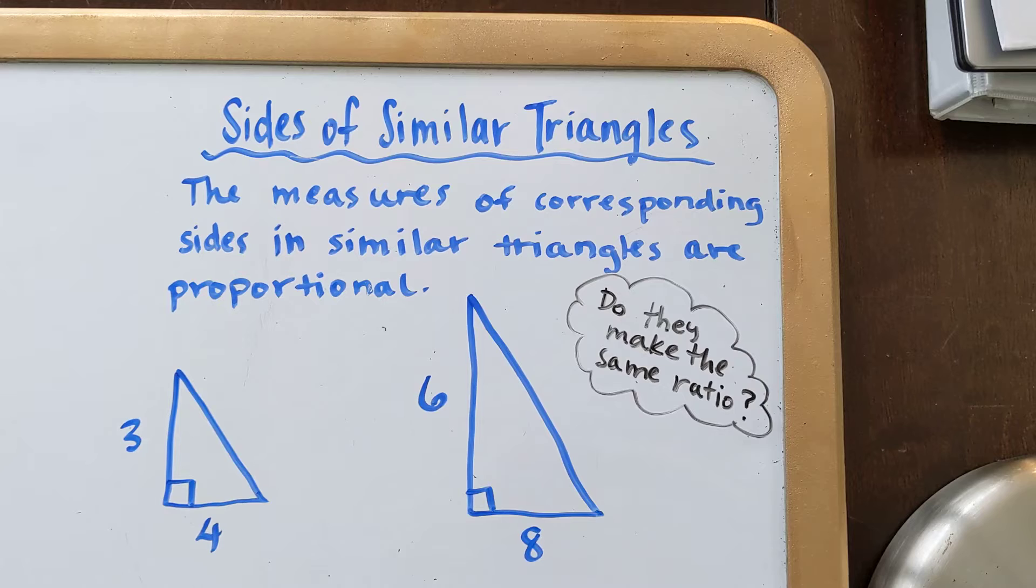Last lesson we learned that two triangles are similar if they have all the same angles, and we also learned that you really only need to check two of those angles in order to figure out if they're similar.